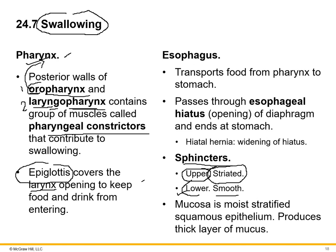The esophagus is posterior to the trachea and passes through a hole in the diaphragm called the esophageal hiatus, attaching to the stomach. The inner surface of the esophagus is highly mucosal and lined with non-keratinized stratified squamous epithelium. A lack of mucus production here can result in esophageal ulcers or pain with swallowing.